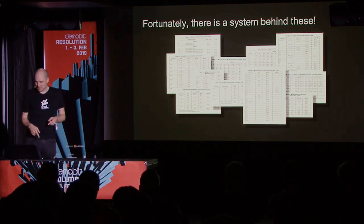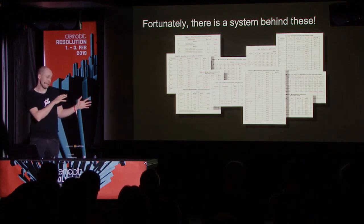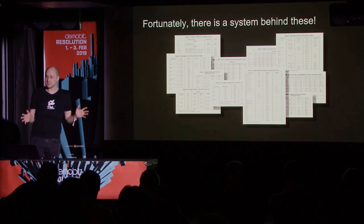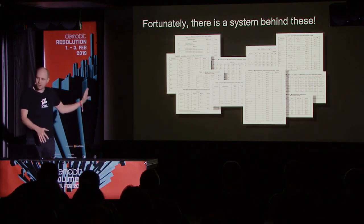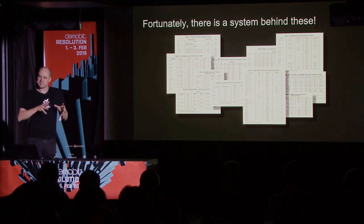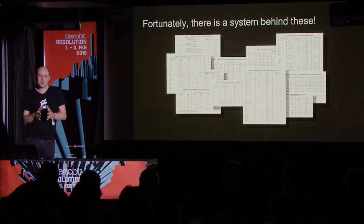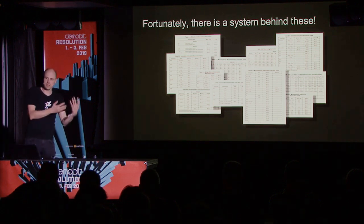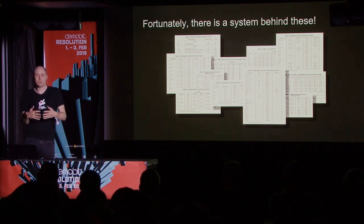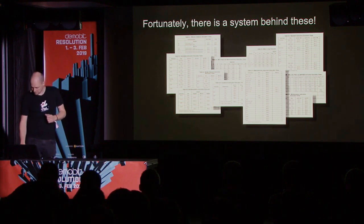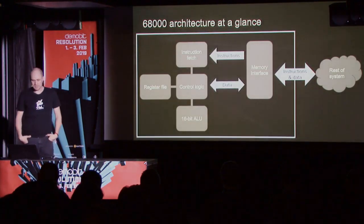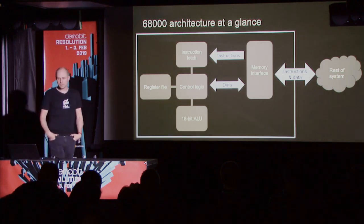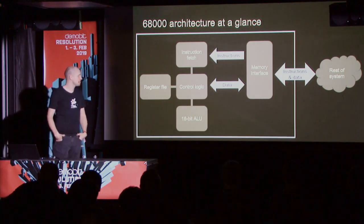If you look through these tables, you can find some patterns. By knowing these patterns, you don't need to know the tables by heart — you can already guess pretty well how much time a specific instruction will take, or how much time a set of instructions will take. To understand that, we need to take a quick look at the 68000 architecture.